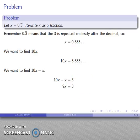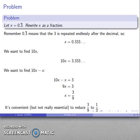And 10x minus x is going to be 9x. And now I could solve for x. x is 3 ninths. And there's my solution. And it's convenient, but not absolutely critical to reduce that fraction. 3 ninths gets reduced down to 1 third.